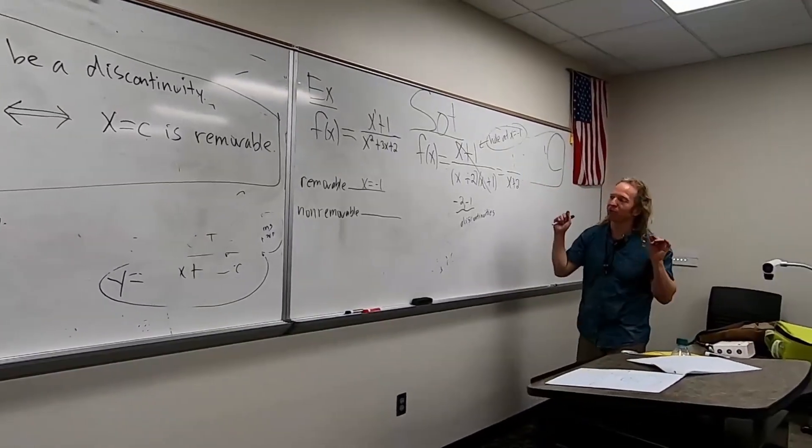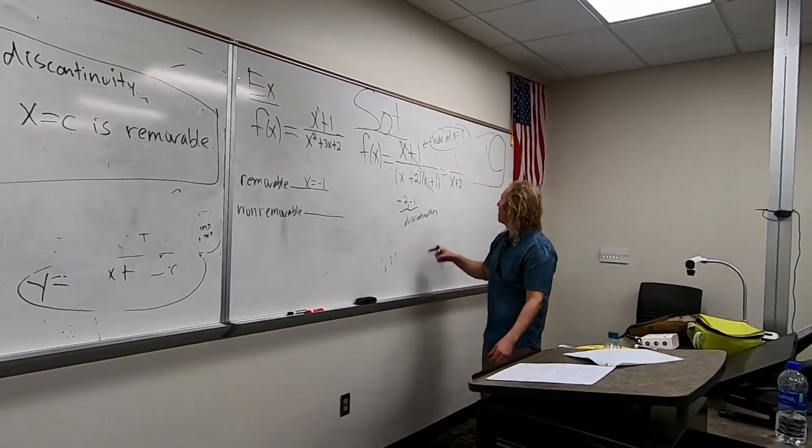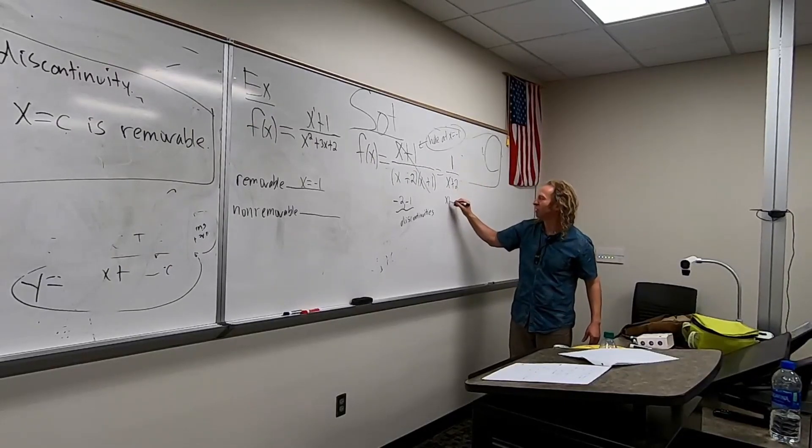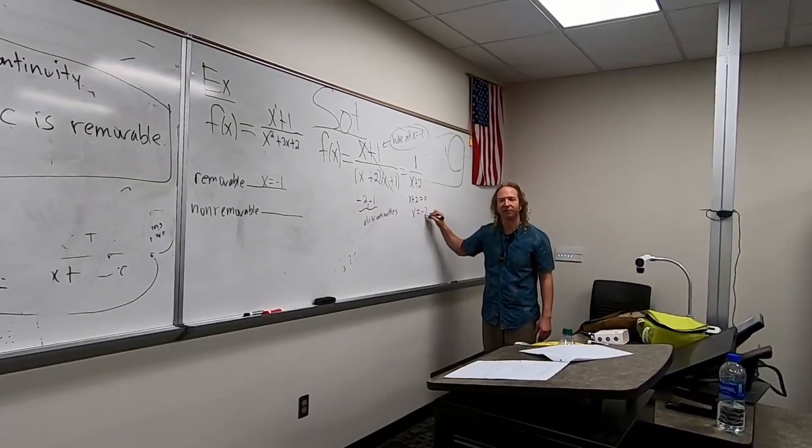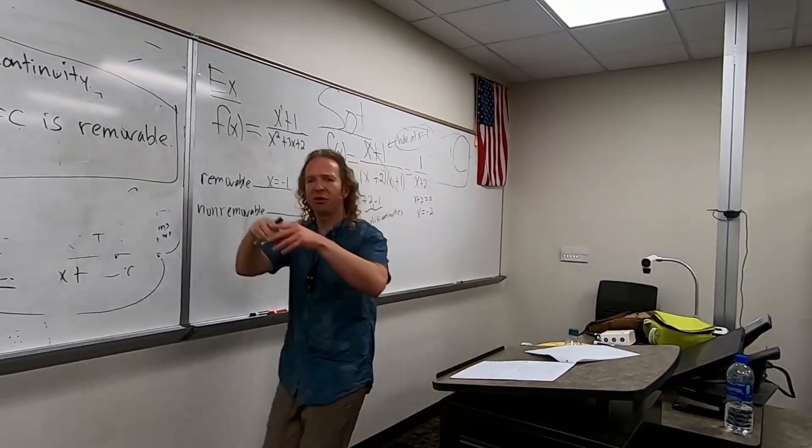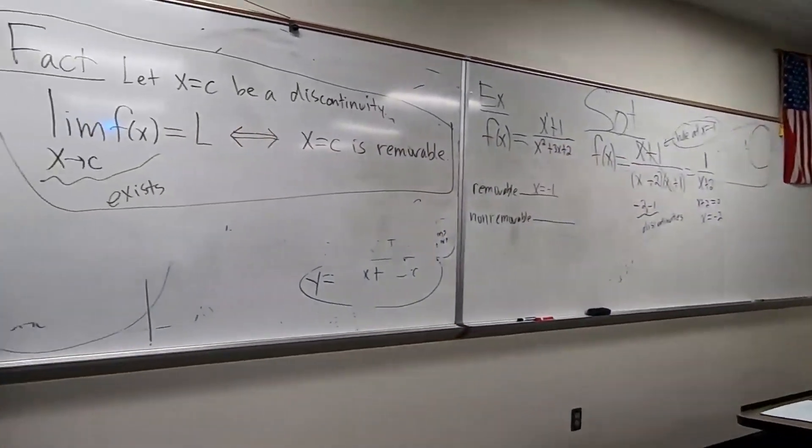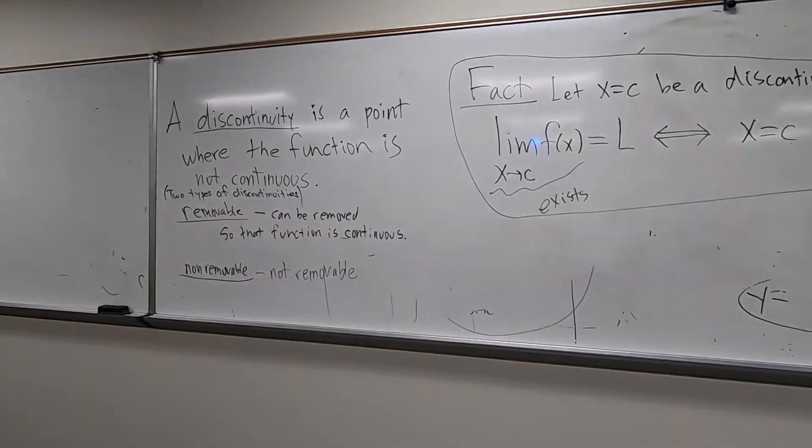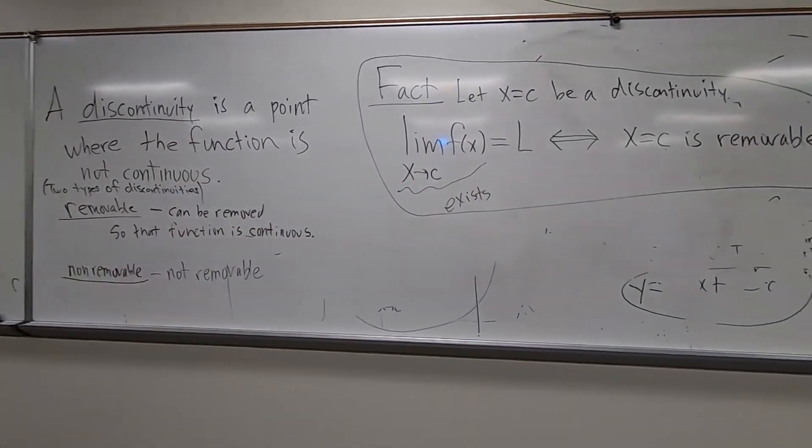So holes in rational functions are always removable. And then here, we can find something here. If you set this equal to 0, you get negative 2, right? What is that in the graph? Do you all remember? Vertical asymptote? Yeah! This is a VA, right? It's a vertical asymptote. So VA. So x equals negative 2 is a VA, right?